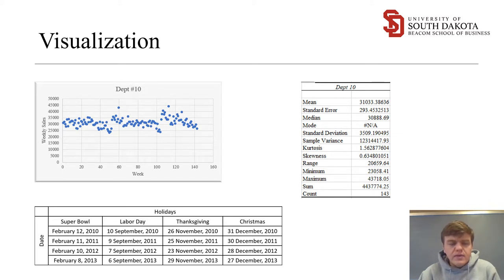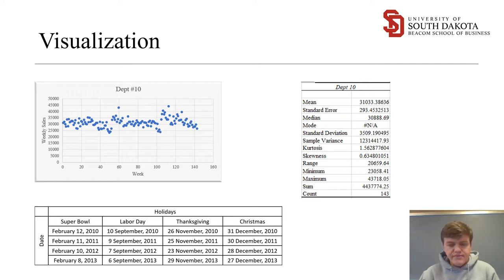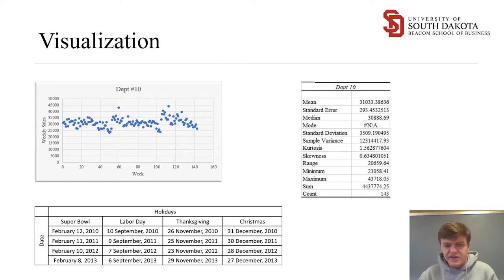Going more in depth with the exploration of the data, we're going to specifically look at department 10. In the top left corner you'll see a scatter plot of all the weekly sales points. It's pretty easy to see the seasonal component — around week 60 and around week 120 there are highs, and that is the Christmas season. It's pretty normal for retail to see an increase in sales around the holiday season, so I took note and tried to later add a seasonal component to my analysis.